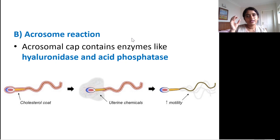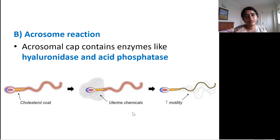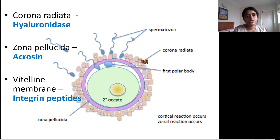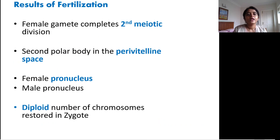The acrosome reaction involves the acrosome cap at the head of the sperm, which contains enzymes like hyaluronidase and acid phosphatase. These chemicals lyse the hurdles. Specifically: hyaluronidase acts at the corona radiata level, acrosin acts at the zona pellucida level, and integrin peptides act at the vitelline membrane level.